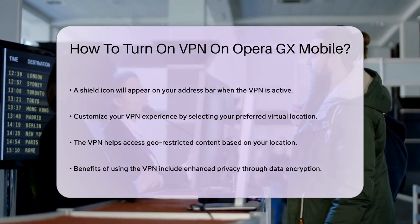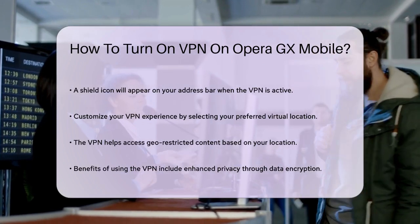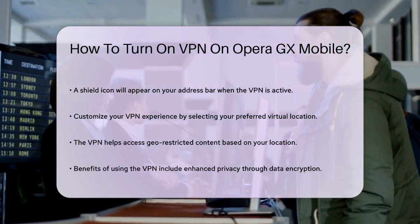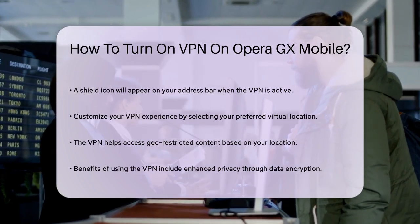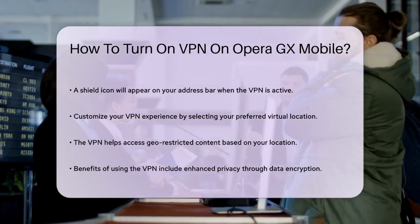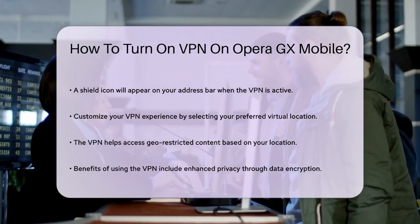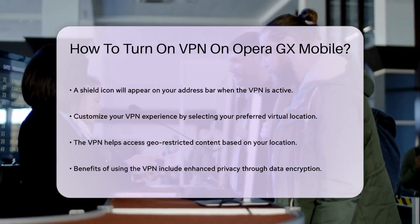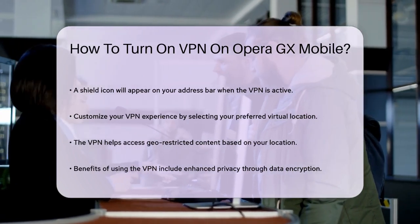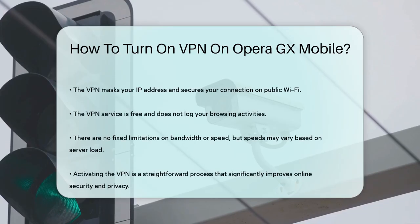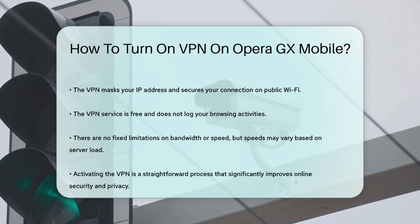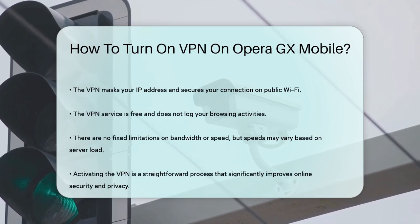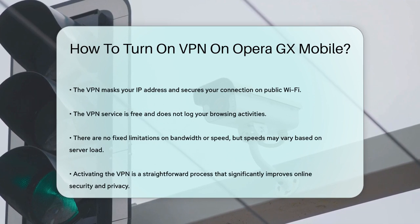Using the VPN on Opera GX Mobile offers several benefits, including enhanced privacy by encrypting your data and masking your IP address. It also secures your connection when you're using public Wi-Fi networks, which can be particularly vulnerable to threats. The VPN service in Opera GX Mobile is free and does not log your browsing activities, ensuring your privacy remains intact. Plus, there are no fixed limitations on bandwidth or speed, although your browsing speeds may vary depending on the server load.